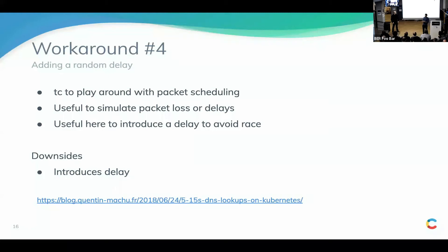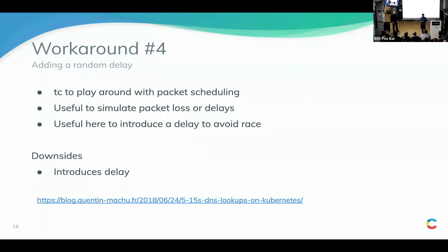One other approach: since this is a race condition in the conntrack module, you can introduce a small delay every time a UDP packet is sent, using TC — a tool to create packet delays — combined with iptables. TC introduces a delay to a specific packet which avoids the race condition. But this creates a brand new snowflake in your infrastructure and is probably not something you would want.